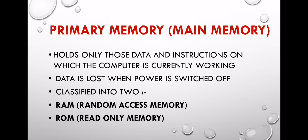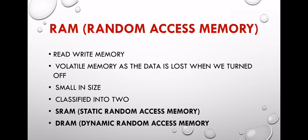This is the primary memory. Primary memory includes RAM and ROM. RAM stands for Random Access Memory, also called Read Write Memory. RAM is volatile memory — when the power is switched off, data is lost. It is small in size. RAM is classified into SRAM, which is Static Random Access Memory, and DRAM, which is Dynamic Random Access Memory.